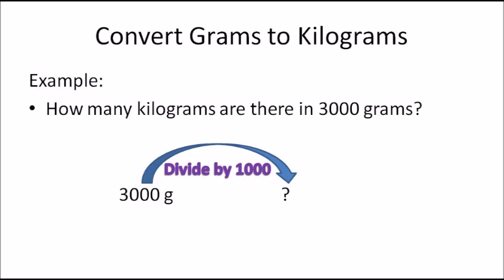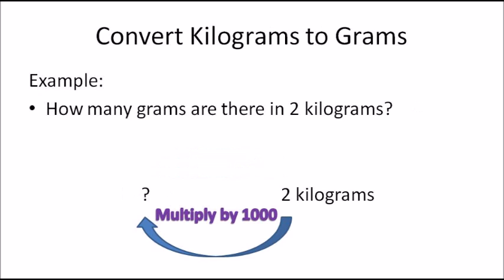So 2000 g would be 2 kilograms, and 3000 g is 3 kilograms — always divide by 1000. Now, how many grams are there in 2 kilograms? You multiply by 1000 because you're going back to grams. So 2 × 1000 = 2000 grams.